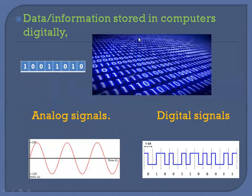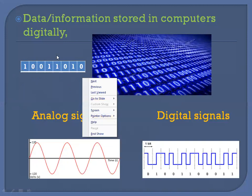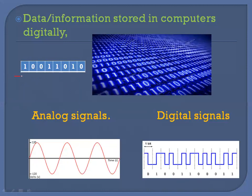Data or information stored in computers is in the form of digits. Digits, or binary numbers, are zeros and ones. A combination of eight bits makes up a single character — that may be a capital letter, a small letter, or any number. Eight bits are required to store a single character in the computer memory.